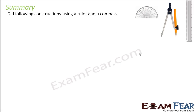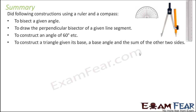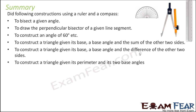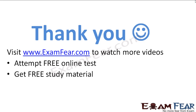Let's do a quick summary. Using ruler and compass, we have learned: to bisect a given angle; to draw a perpendicular bisector for a given line segment; to construct angles like 60, 30, 45, and 90 degrees; to construct a triangle given its base, base angle, and sum of the other two sides; to construct a triangle given its base, base angle, and difference of two sides (two cases); and to construct a triangle given its perimeter and two base angles. Visit examfear.com for more quality education videos, free online tests, study materials, and free tutors. Thanks for watching.